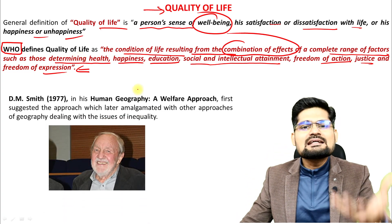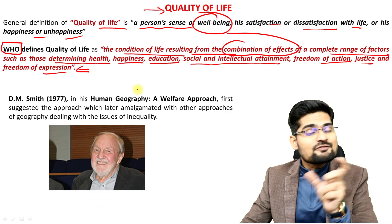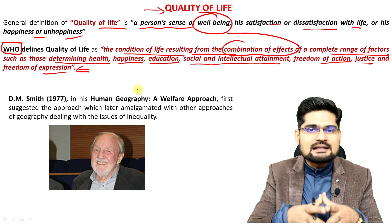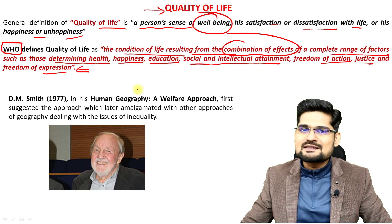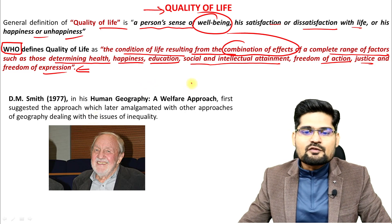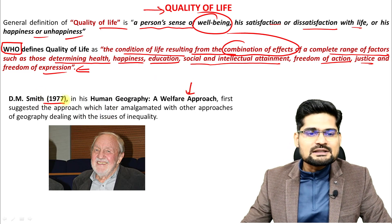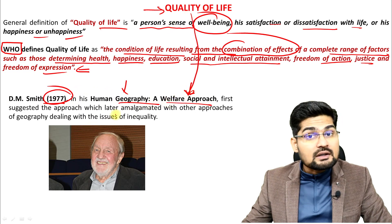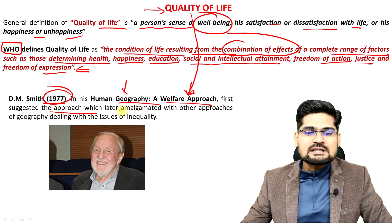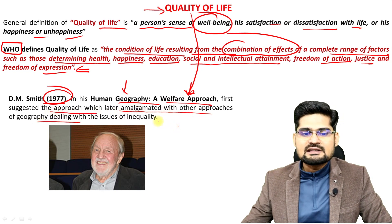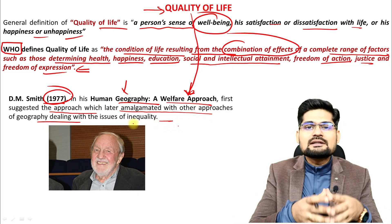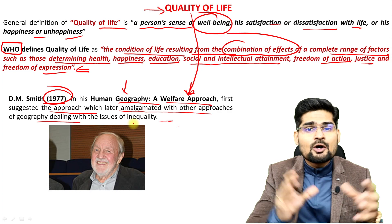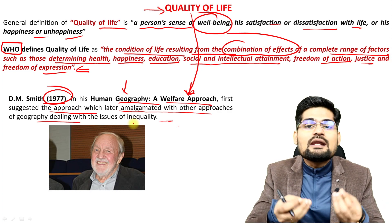Quality of life entered geography through the social welfare approach. D.M. Smith brought it to human geography in his work on the human geography of welfare, where quality of life becomes really important. This approach later amalgamated with other geographical approaches dealing with inequality. It was D.M. Smith's work that paved the way for studying quality of life and quality of population at community, personal, and national levels — all stemming from the concept of welfare.